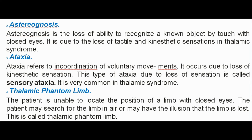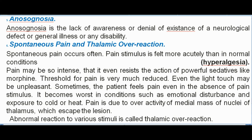Thalamic phantom limb: the patient is unable to locate the position of a limb with closed eyes and may search for the limb in air or have the illusion that the limb is lost. Anosognosia is the lack of awareness or denial of existence of a neurological defect, general illness, or any disability. Spontaneous pain and thalamic overreaction: spontaneous pain occurs often; pain stimulus is felt more acutely than normal (hyperalgesia). Pain may be so intense that it resists powerful sedatives like morphine. The threshold for pain is greatly reduced, and even light touch may be unpleasant. The patient may feel pain even in the absence of a pain stimulus. Pain is worst with emotional disturbance or exposure to cold or heat, and is due to overactivity of medial mass of nuclei of thalamus, which escape the lesion.